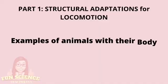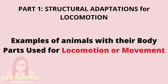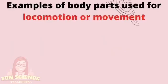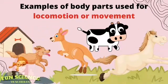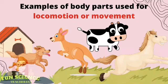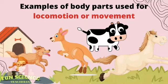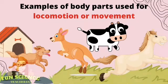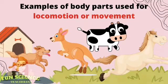Here are some examples of animals with their body parts used for locomotion or movement. Animals such as horse, cow, dog, and kangaroo use their legs to walk, run, hop, or jump.